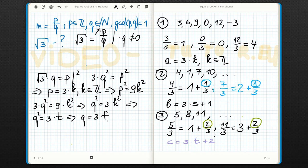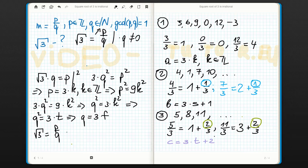Okay, and what do we have right now? We have square root of 3 equals p over q, which is, by our proof, 3 times k over 3 times f.